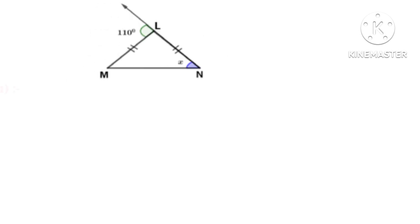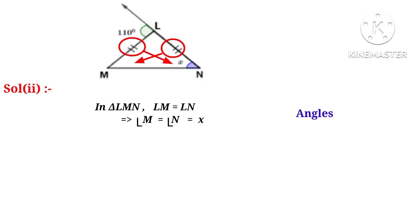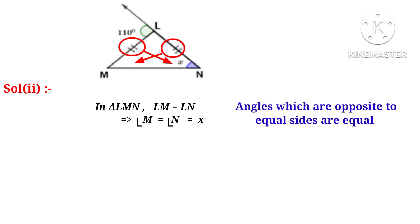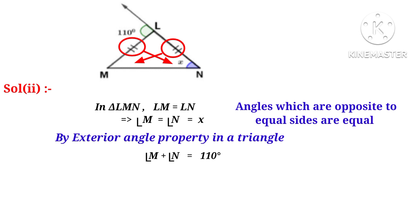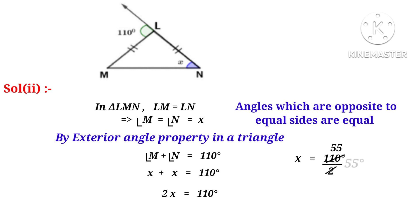Solution 2: in triangle LMN, the sides LM and LN are both of equal length as shown by tick marks, which implies angle M is equal to angle N, let that be X, because angles opposite to equal sides are equal. Now by the exterior angle property, angle M plus angle N equals 110 degrees. So X plus X equals 110 degrees, giving 2X equals 110 degrees. Therefore X equals 55 degrees.